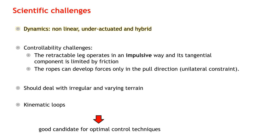Second, one of the actuators, the retractable leg, operates in an impulsive way, while the ropes can only develop forces in the pulling direction. Third, the robot should be able to deal with irregular and varying terrain avoiding natural obstacles. Fourth, a kinematic loop appears in the two-anchor setting. These challenges make the platform a good candidate for optimal control techniques.